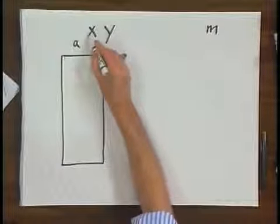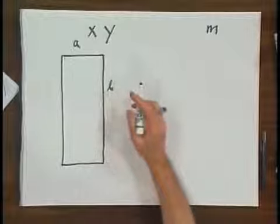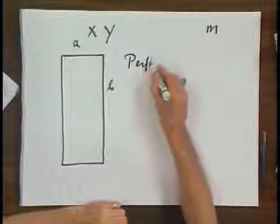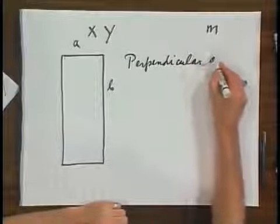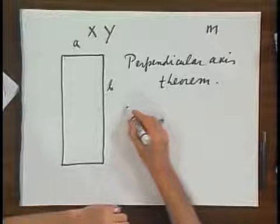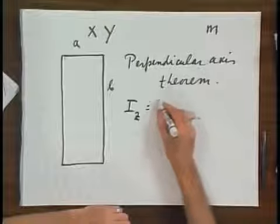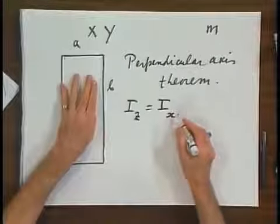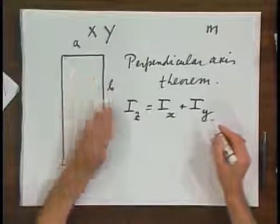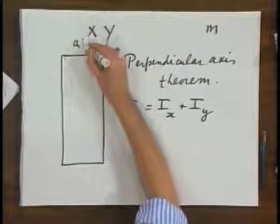I can choose any axes X and Y in the plane through the sheet. They are perpendicular to each other. The perpendicular axis theorem tells me the moment of inertia about the Y axis, which I can choose in this plane. X and Y are perpendicular to each other. You can choose X and Y in crazy ways, but I will not do that.